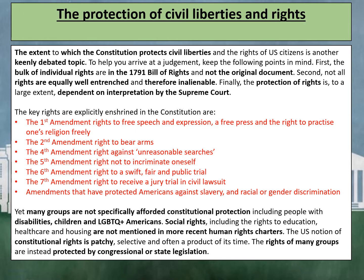Yet many groups are not specifically afforded constitutional protection, including people with disabilities, children and LGBTQ+ Americans. Social rights, including the rights to education, healthcare and housing, are not mentioned in more recent human rights charters. The US notion of constitutional rights is patchy, selective and often a product of its time. The rights of many groups are instead protected by congressional or state legislation.